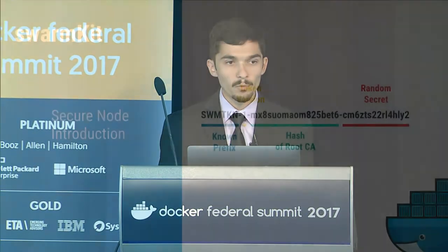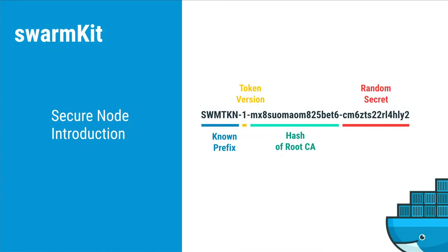The last part of the token is a random secret that serves as proof of authorization to join the Swarm with a specific role. In SwarmKit we have two roles: administrative manager nodes with more privilege, and lesser privileged worker nodes that take containers and run workloads.